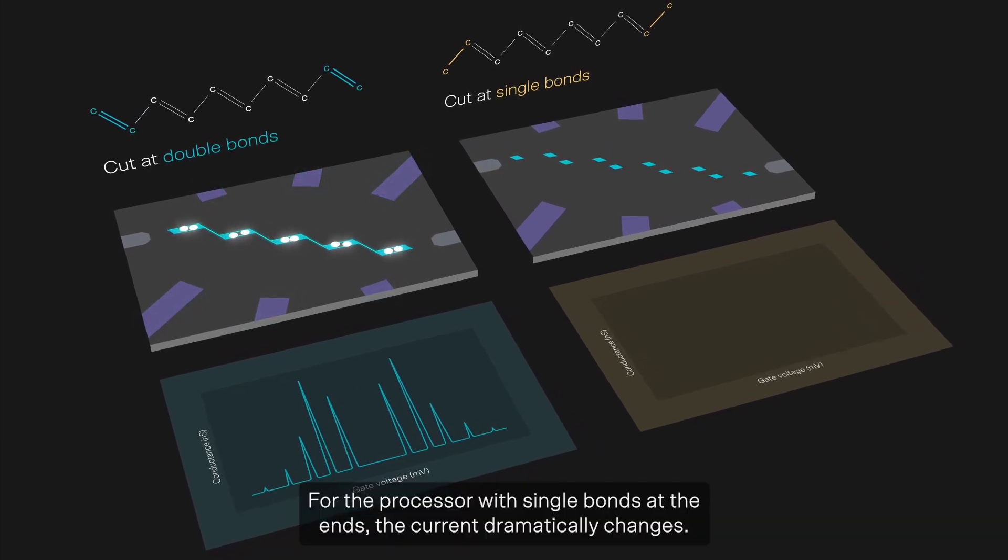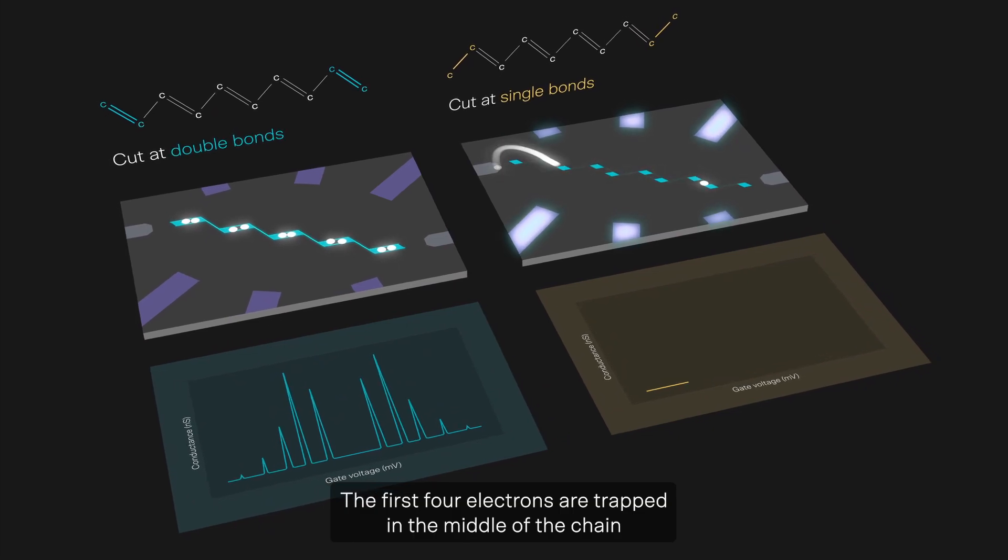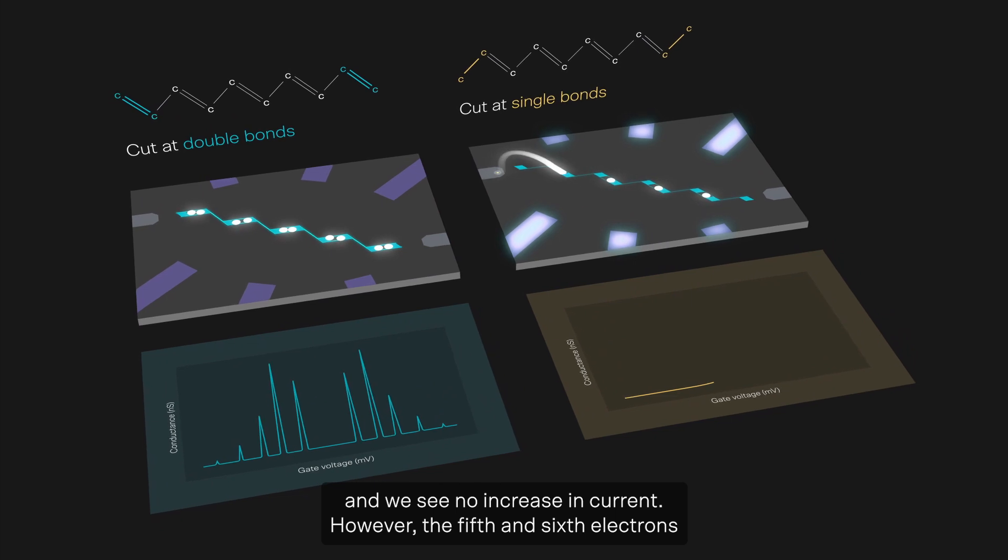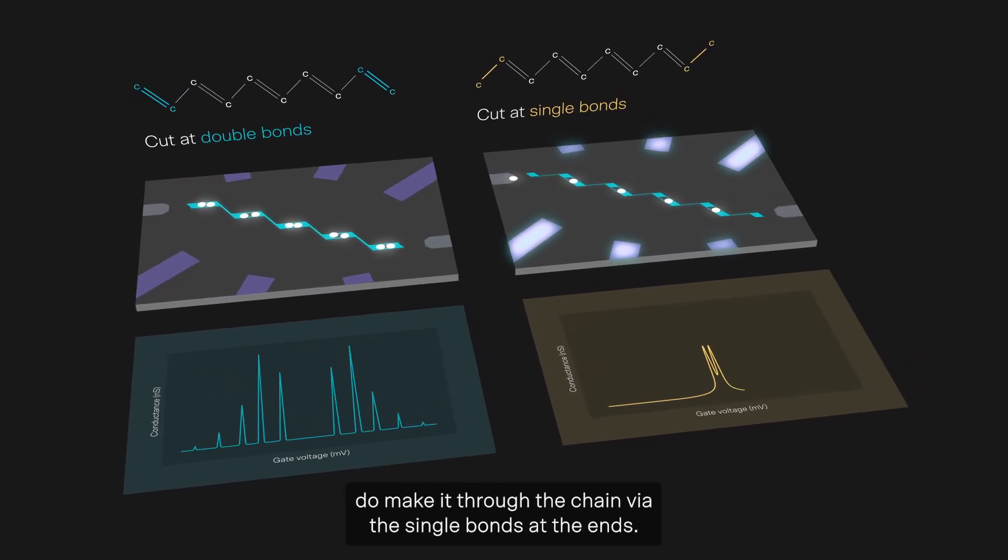For the processor with single bonds at the ends, the current dramatically changes. The first four electrons are trapped in the middle of the chain, and we see no increase in current. However, the fifth and sixth electrons do make it through the chain via the single bonds at the ends.